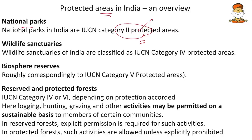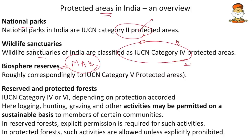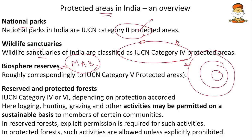Wildlife sanctuaries can be declared by both central and state governments. They are declared only to protect wildlife — not the whole ecosystem — and fall under IUCN Category 4. Biosphere reserves are an innovation under the Man and Biosphere Programme of the United Nations, with core areas, buffer areas, and human habitat areas. They fall under IUCN Category 5 and focus on both ecosystem conservation and better environmental management.